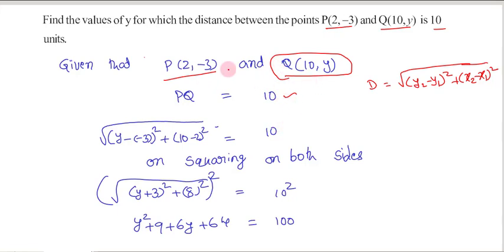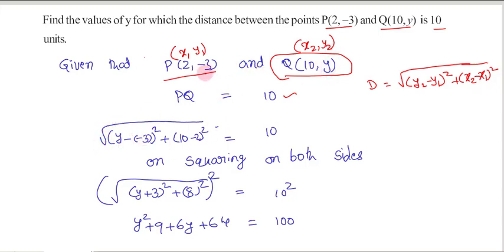While finding the distance between P and Q, I am supposing point P as (x1, y1) and point Q as (x2, y2). So our formula gives: √((y2 - y1)² + (x2 - x1)²) = √((y - (-3))² + (10 - 2)²) = 10 units.